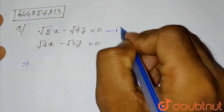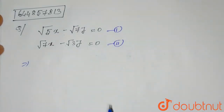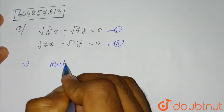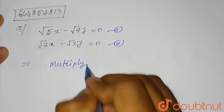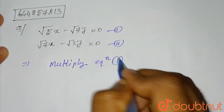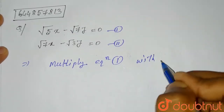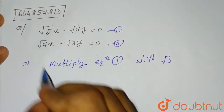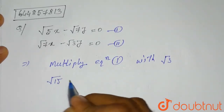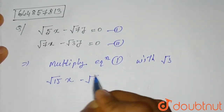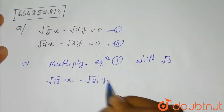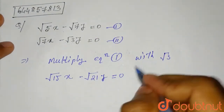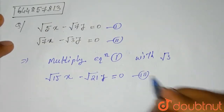Let's say this is equation 1 and this is equation 2. We will multiply equation 1 with root 3. What we will get after multiplying with root 3? It will be root 3 into root 5, that means root 15 X, minus root 21 Y equals to 0. This is the third equation.